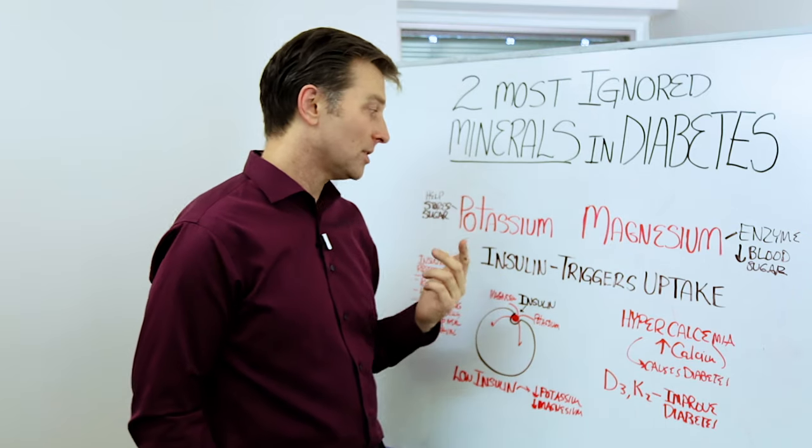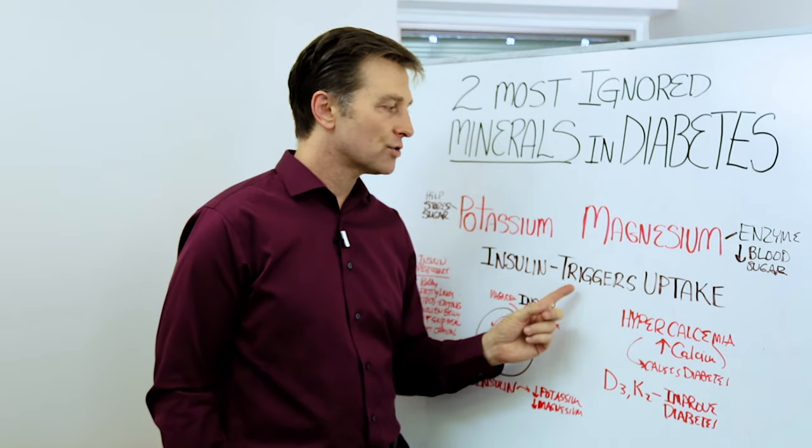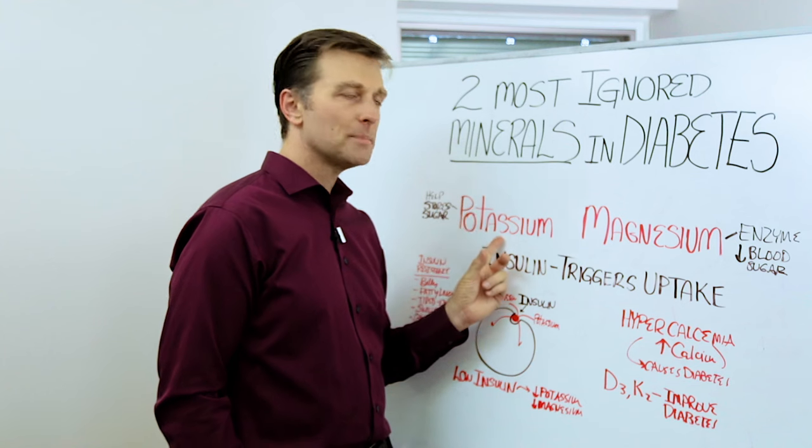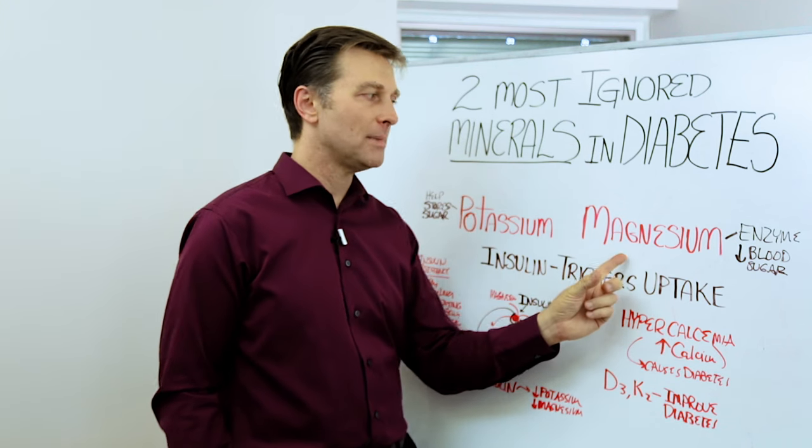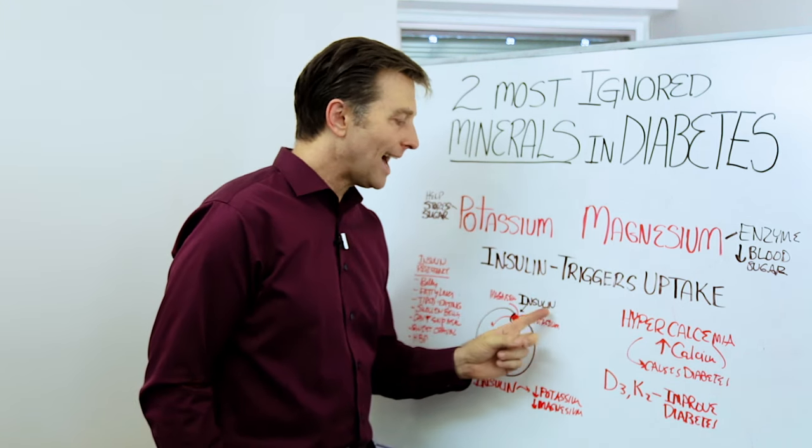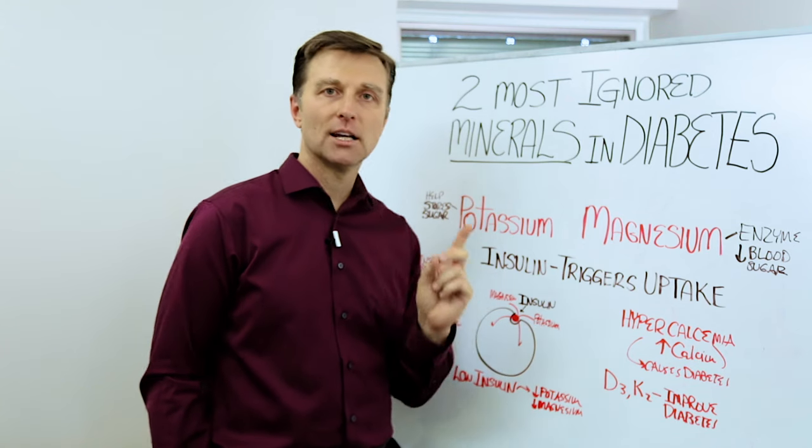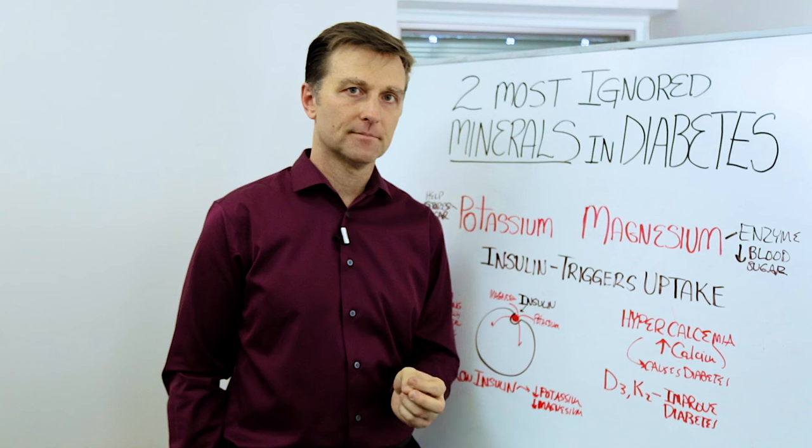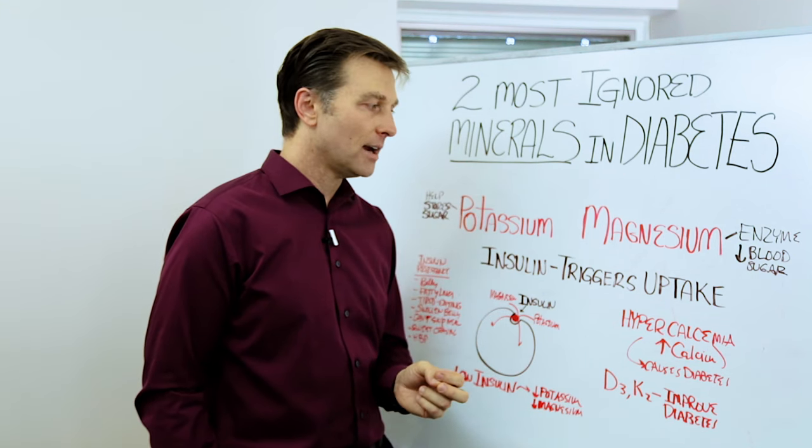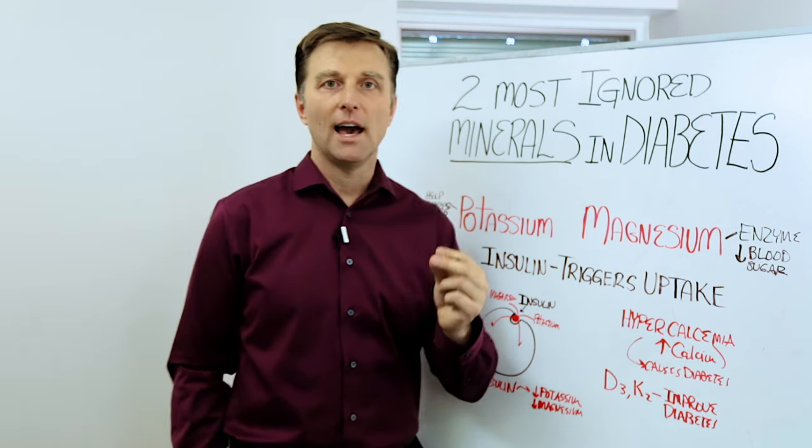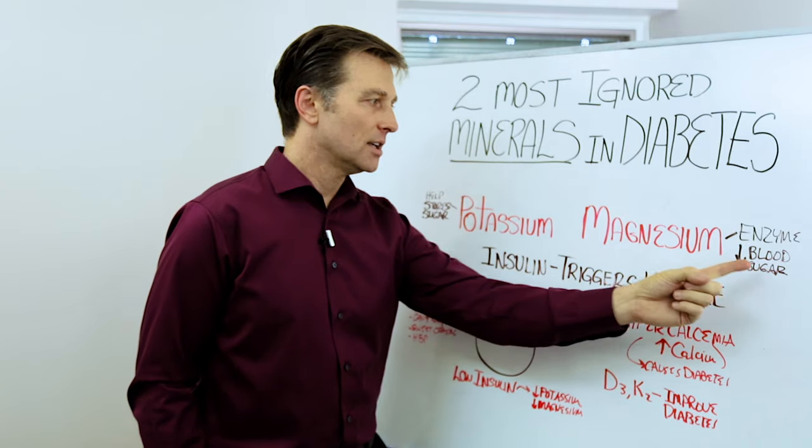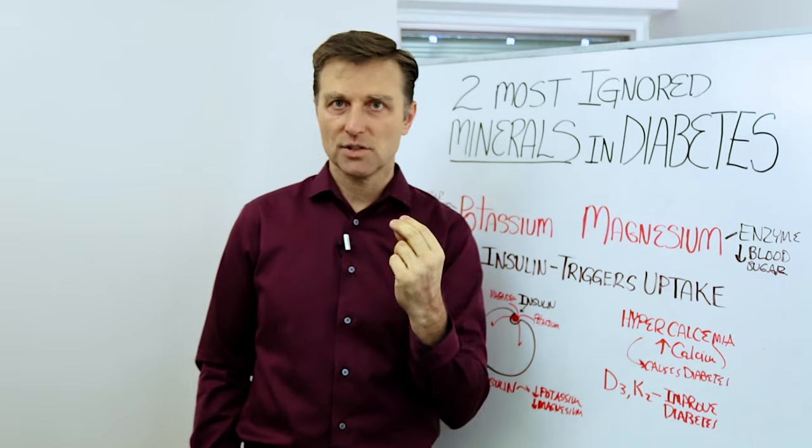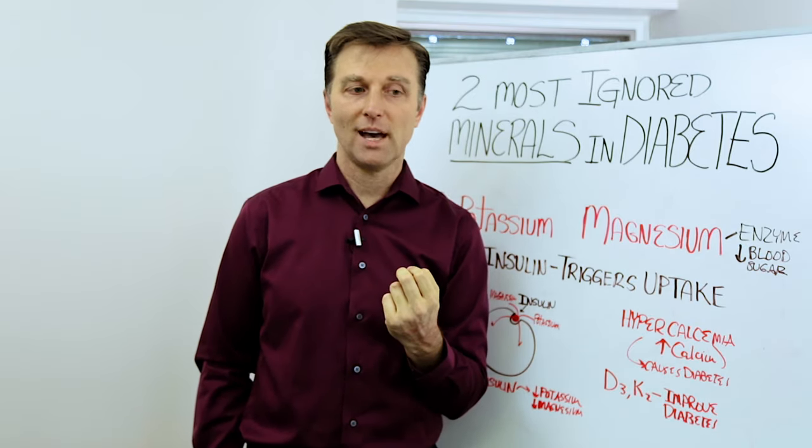But here's the thing that people don't realize. Insulin triggers the absorption uptake of both potassium and magnesium in the cell. Without insulin, you cannot absorb magnesium or potassium. So right there, that's going to create a deficiency. And then both of these actions, the lowering the blood sugars and the storage of glycogen aren't going to happen. So you have a double-edged sword.